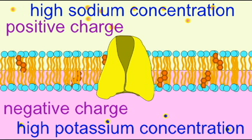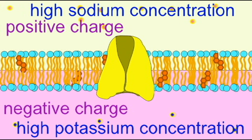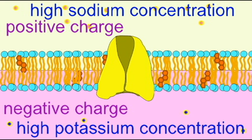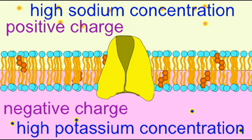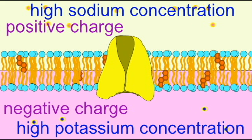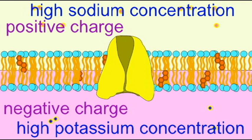As a result, this establishes a resting membrane potential in which the inside of the cell has a negative charge compared to the outside of the cell. There are more positive sodium ions outside the cell than there are potassium ions inside the cell.